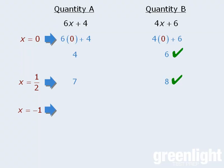What if we try plugging in –1? If x equals –1, then the two quantities evaluate to be –2 and 2, in which case quantity b is still greater than quantity a. At this point, we might incorrectly conclude that quantity b will always be greater than quantity a for all values of x. So let's try another value of x. What about x equals –10? In this case, the two quantities evaluate to be –56 and –34, in which case quantity b is still greater than quantity a.